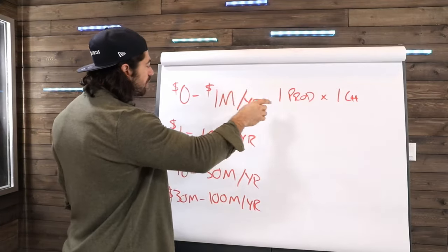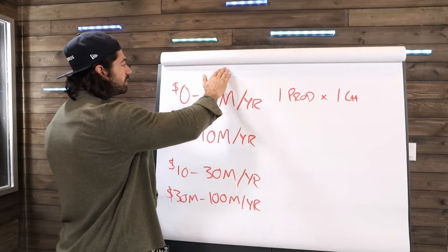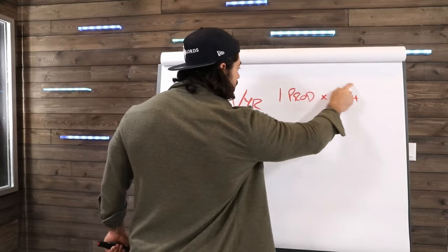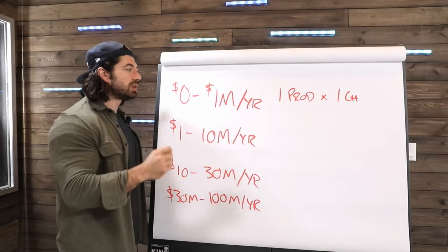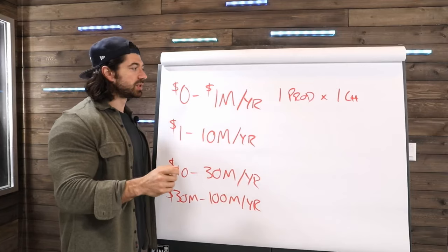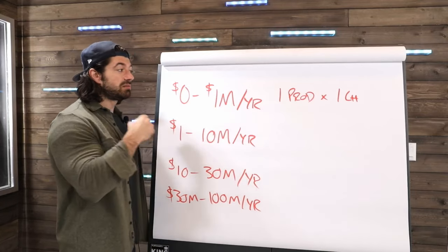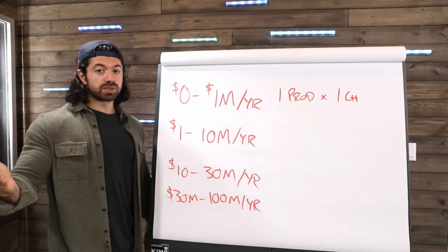And the reason people get stuck in like 100, 300-ish range is usually because they still haven't really nailed this. It's still haphazard. They get clients from here and there, but they don't have a reliable system for acquiring customers. That's it. Zero to a million. It's a reliable system of acquiring customers and doing it.